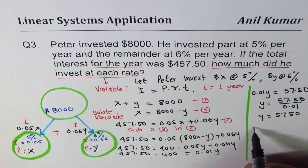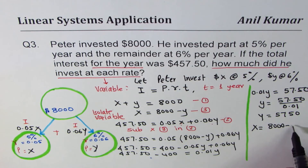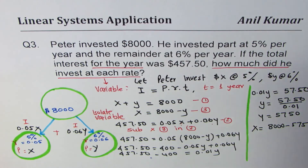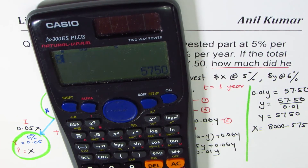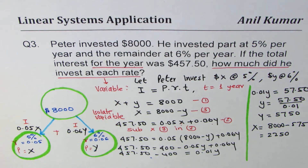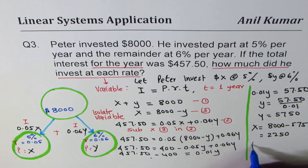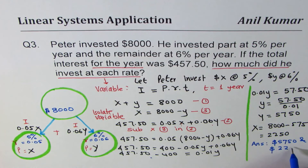Now that y = 5,750, we find x: x = 8,000 − y = 8,000 − 5,750 = 2,250. Both values are in dollars, so the answer is: Peter invested $5,750 at 6% and $2,250 at 5%, and these add up to $8,000.